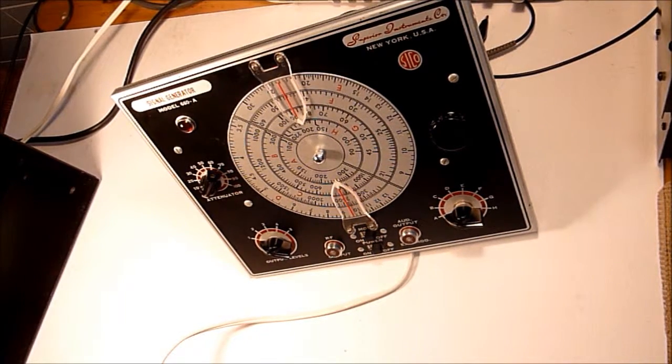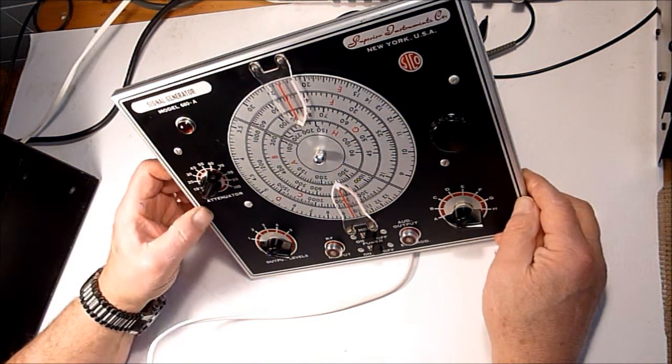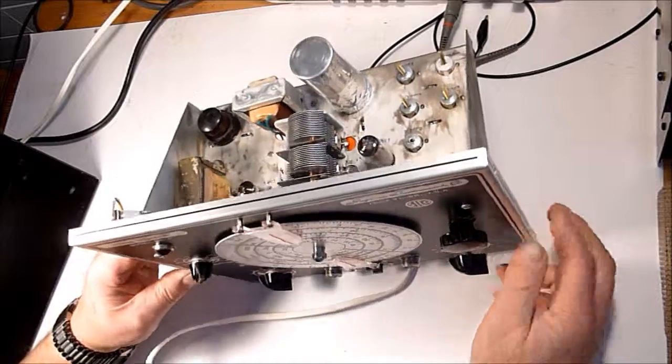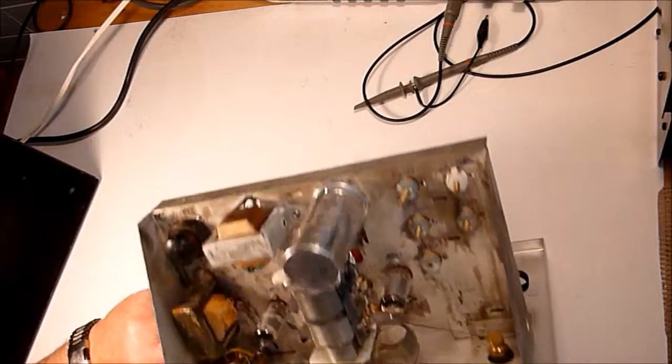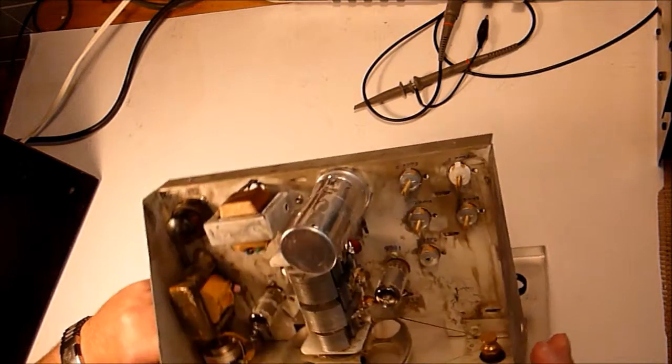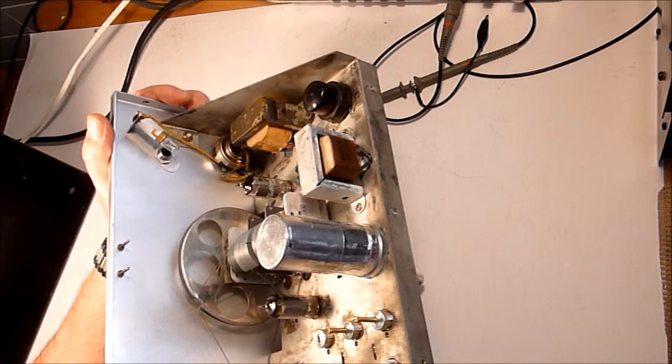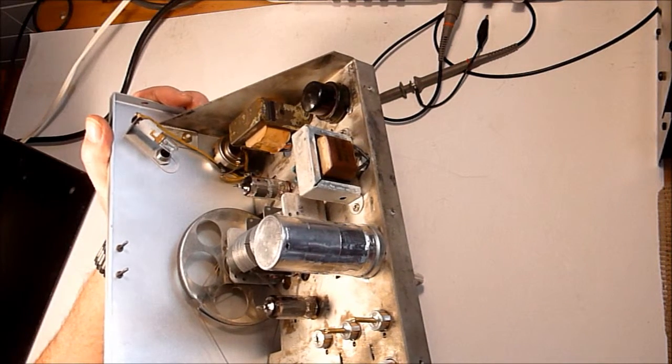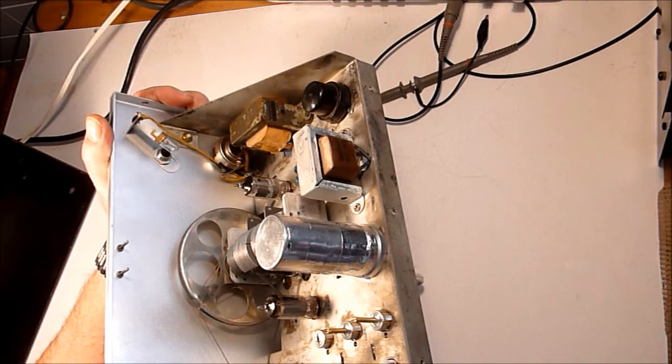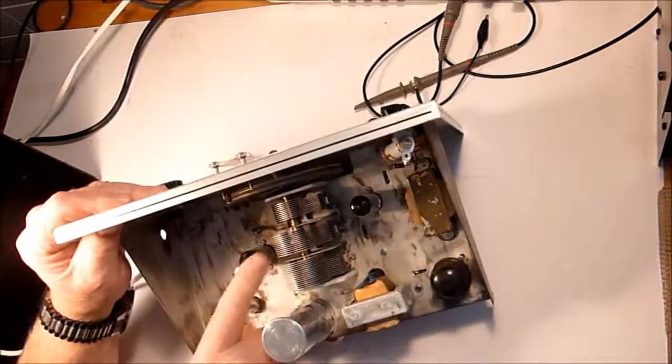This is a continuation of the signal generator model 660A by Superior Instruments Company. Since the last time I made a video, I have replaced the capacitors inside of this can. I restuffed it. I also found out that there was a choke missing right over here and have replaced that. What that choke does is it interfaces the modulation signal with the RF signal. Also found out these tubes here are a 6BE6...